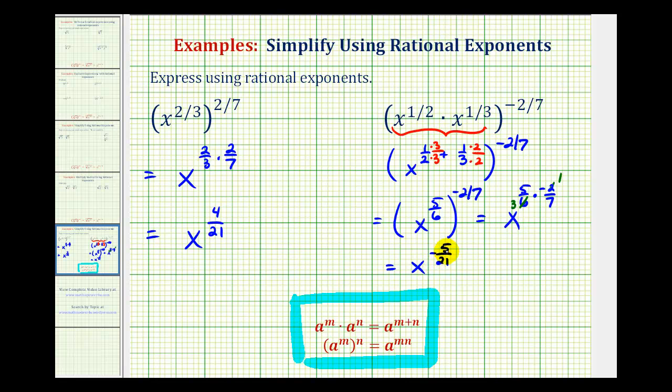And to express this so that it has a positive exponent, we can think of this as a fraction with a denominator of one. And then if we move the base to the denominator, it'll change the sign of the exponent. So this is equal to one over x to the power of positive five over twenty-one. I hope this helps.